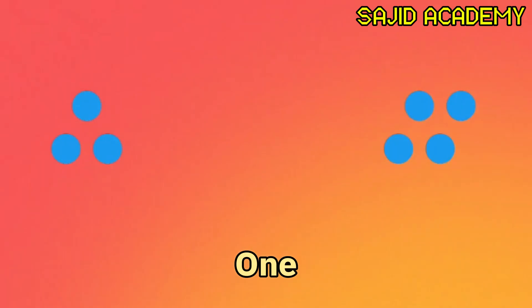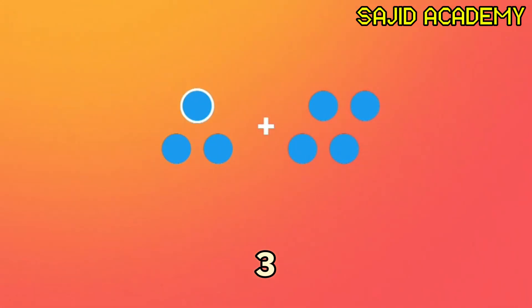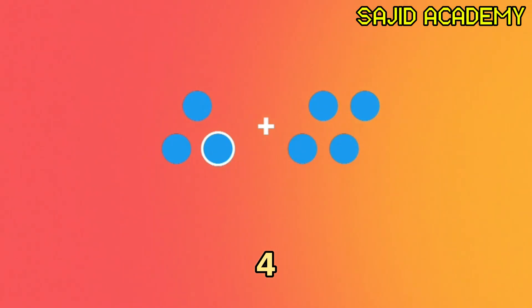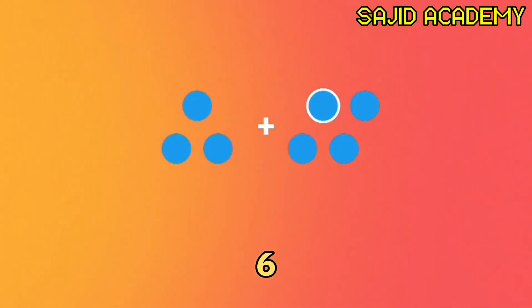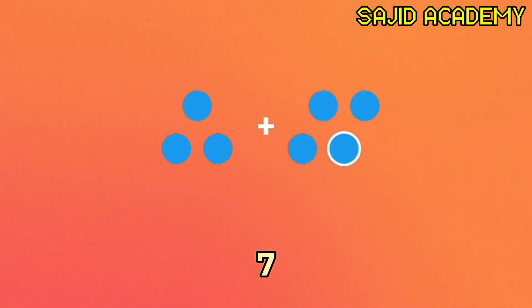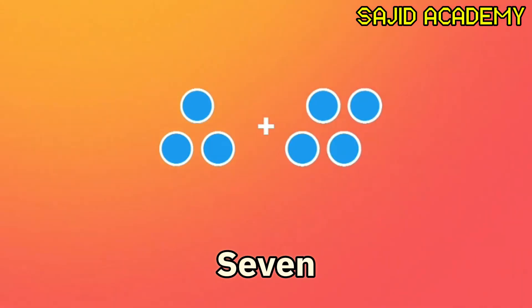One, two, three, four, five, six, seven. Three plus four equals seven.